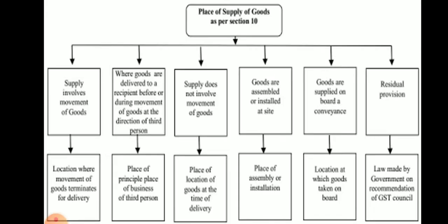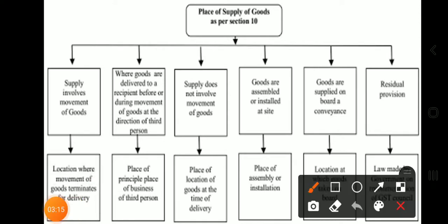We will now take the place of supply of goods under Section 10 — extensions. First आता है: where supply involves movement of goods, then the location where movement of goods terminates for delivery will be taken as place of supply.